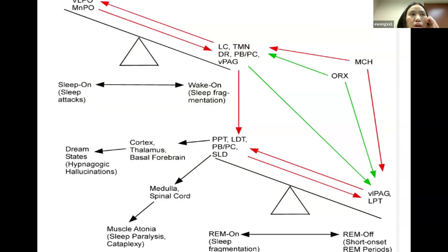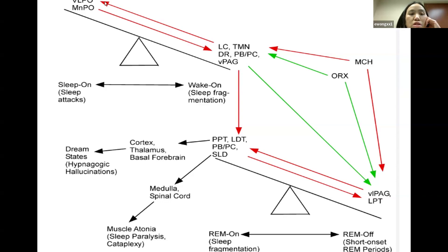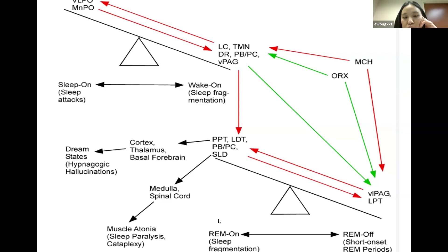The flip-flop switch model — borrowed from electrical engineering — means that if one thing is turned on, the other is automatically turned off. Imagine two seesaws: one side is the sleep-on region producing neurotransmitters that make us sleep; the other side is the wake-on region producing neurotransmitters that maintain wakefulness. The other seesaw is about REM-on cells and REM-off cells.